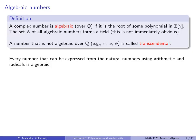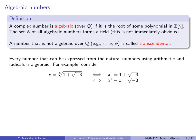Every number that can be expressed from the natural numbers using arithmetic and radicals is algebraic. For example, suppose x is the fifth root of (1 + √(−3)). Then x⁵ = 1 + √(−3). We can isolate the radical on one side, then square both sides to eliminate it, and multiplying out and putting everything on one side gives us a polynomial in x. Clearly our original number is a root of this polynomial, so every number expressible by radicals is algebraic.